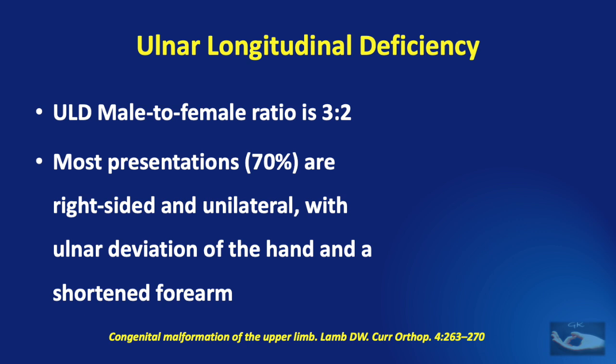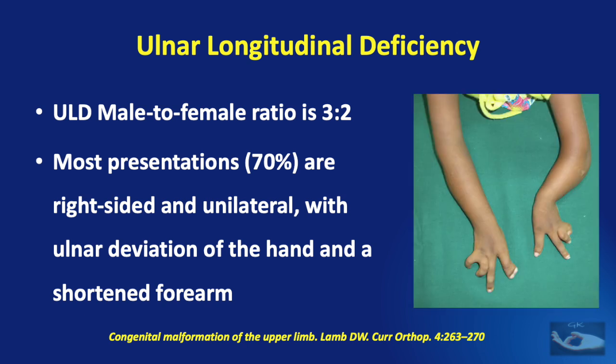Most presentations, about 70%, are right-sided and unilateral with Ulnar deviation of the hand and a shortened forearm. But it can be a bilateral presentation, like in this example.